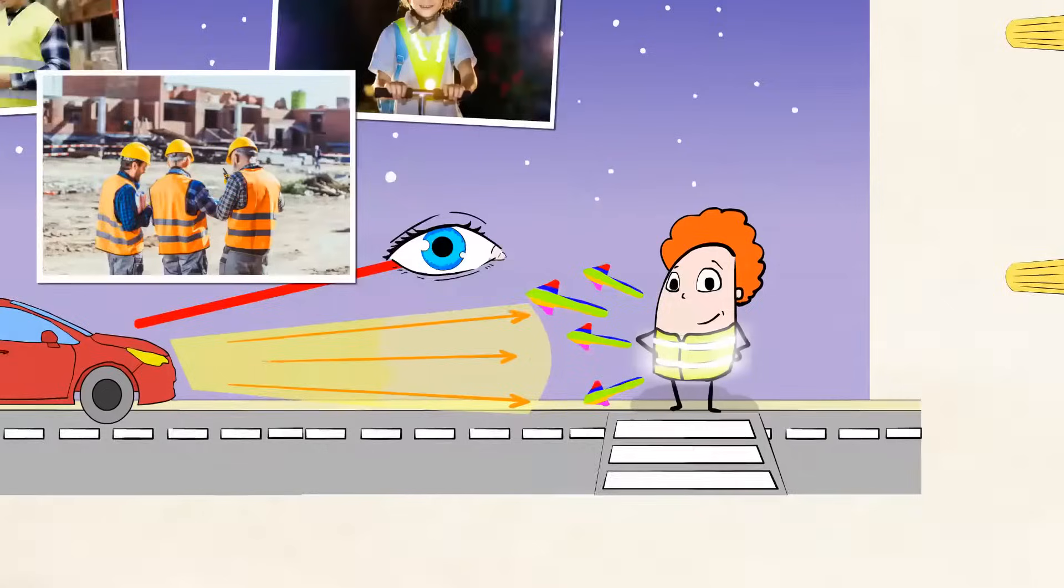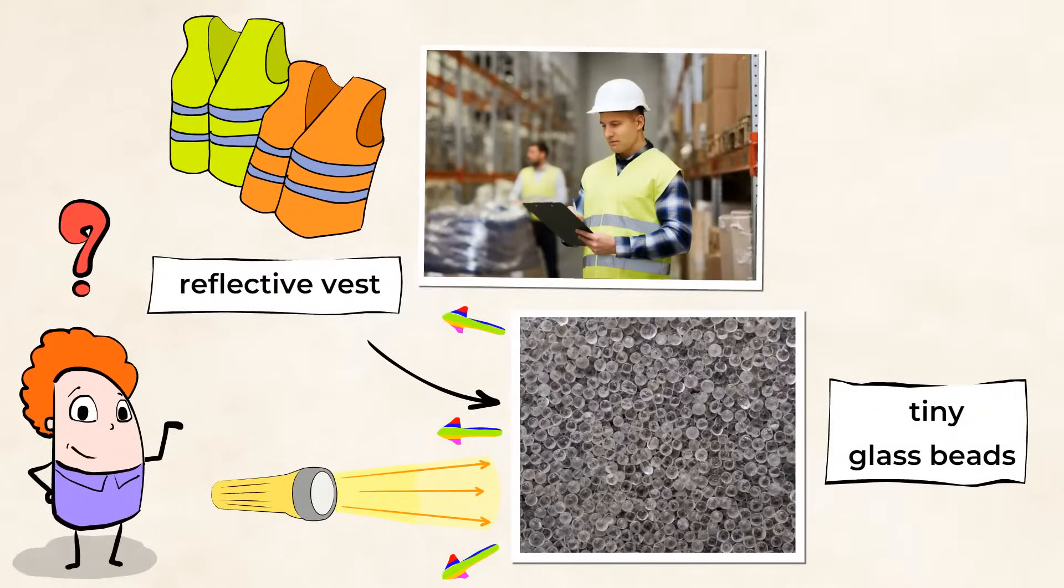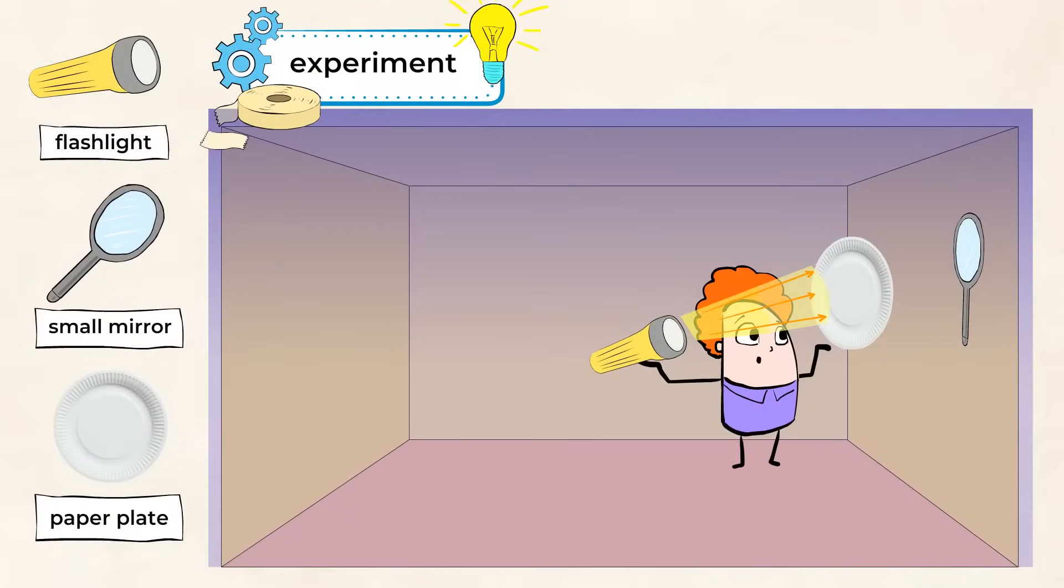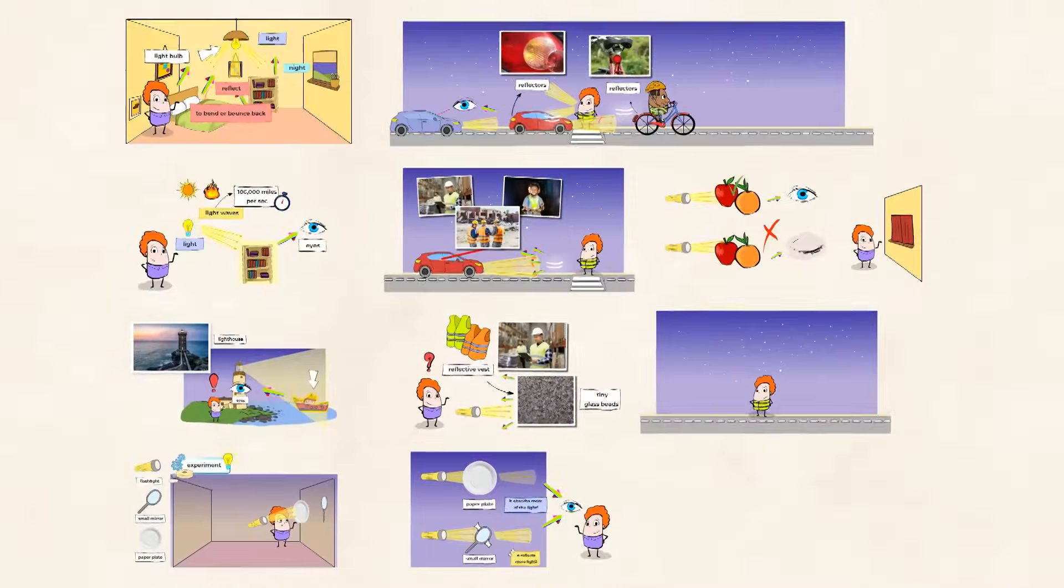Shiny, smooth materials like these reflect a lot of the light, while bumpy, rough materials like a paper plate absorb more light, making them harder to see in dimly lighted spaces. So be sure to keep the lights on if you want to keep learning.